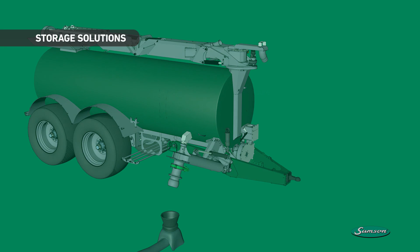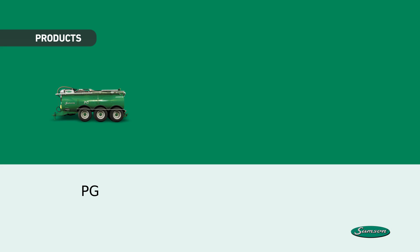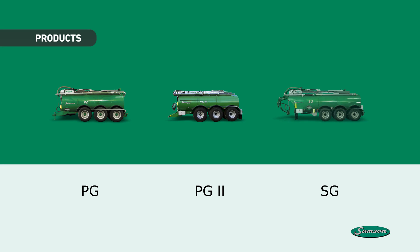The Samson Agro Ejector Vacuum System is available in the following products: PG, PG2 and SG. For more information, visit samson-agro.com.